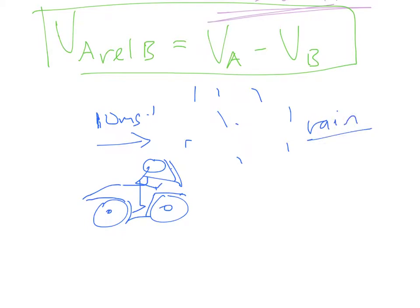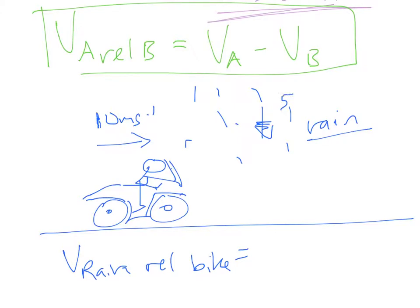So this is an example, I think, from the old virtual textbook, Dennis Virchel's book. And what we're interested in is the velocity of the rain relative to the cyclist, to the bike, we'll say. So the velocity of the rain relative to the bike. The rain's falling at, let's just keep it really simple, 5 meters per second.